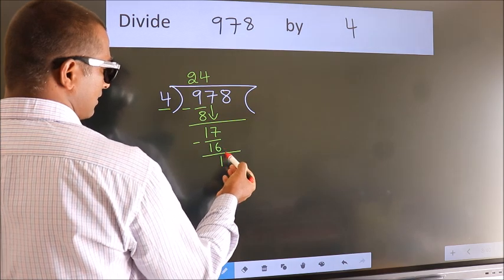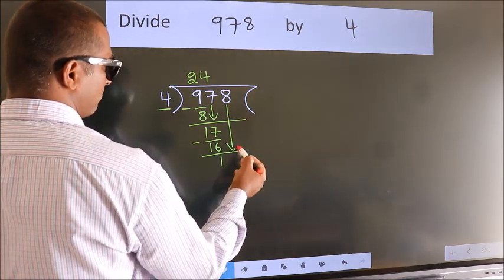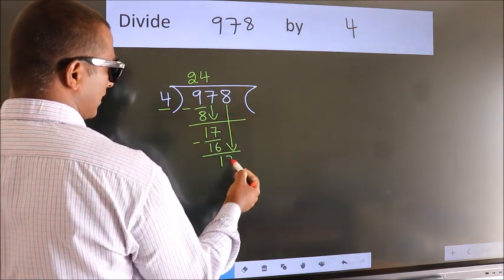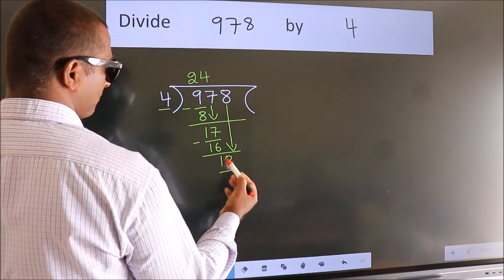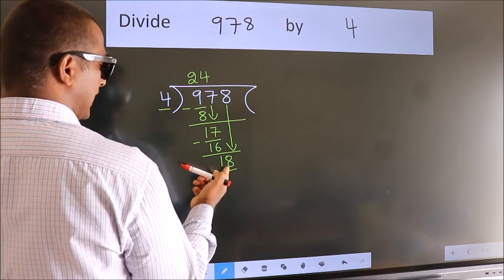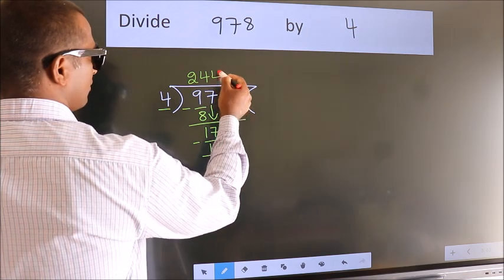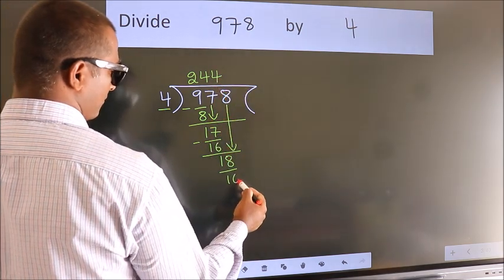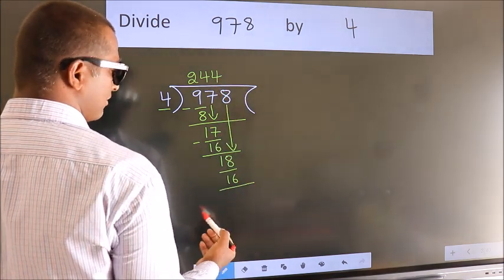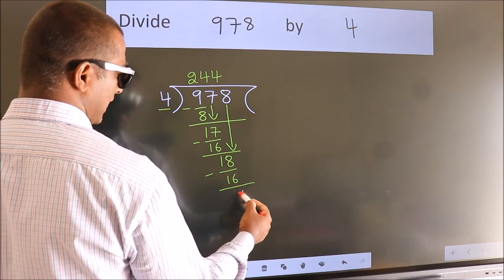After this, bring down the beside number. So, 8 down, making 18. A number close to 18 in the 4 table is 4 fours, which is 16. Now we subtract. We get 2.